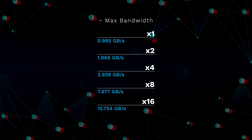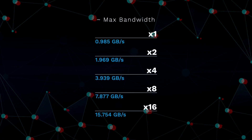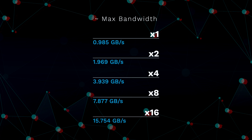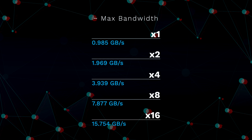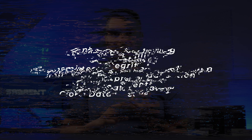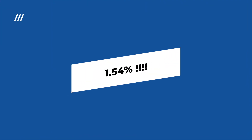For PCIe 3.0, the bandwidth for the X2 slot is 1.969 gigabytes per second, the bandwidth for the X4 slot is 3.939 gigabytes per second, the bandwidth for the X8 slot is 7.877 gigabytes per second, and obviously around 15 gigabytes per second for the X16 slot. Important features that 3.0 brought over from 2.0 were enhanced signaling and data integrity, including transmitter and receiver equalization, PLL improvements and clock data recovery. PCIe also upgraded the coding scheme to 128b/130b, helping to reduce the bandwidth overhead from 20% in PCIe 2.0 to approximately 1.54% with PCIe 3.0 — a significant difference.